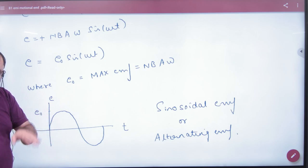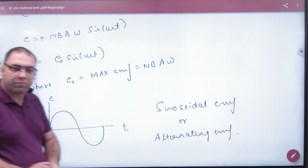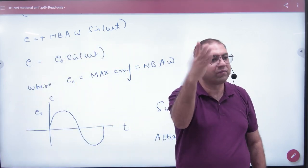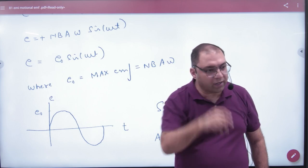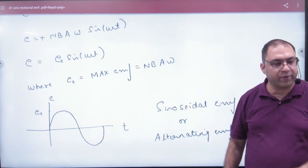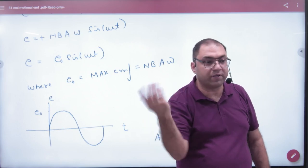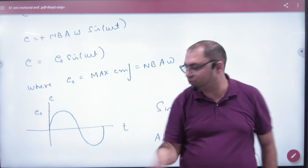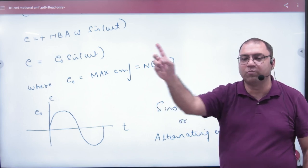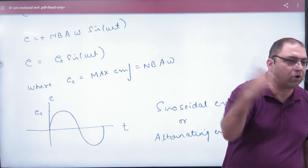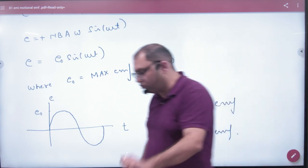Hamare gharo me jo voltage a rahi hai 220, wo ye hi a rahi hai. Dam pe jo bijli banti hai, us me loop dam pe aise ghoomta hai. Aise ghoom raha hai. Or hamare gharo me bijli aise a rahi hai, e nought sin omega t. Kabhi badh rahi hai, kabhi kam ho rahi hai. Or siri kabhi direction bhi kya ho rahi hai, change kar rahi hai. Tabhi to negative cycle a jata hai. Negative ka matlab agar pehle loop pehle baari me current clockwise hai, to agli baari me anti clockwise. Clockwise anti clockwise.